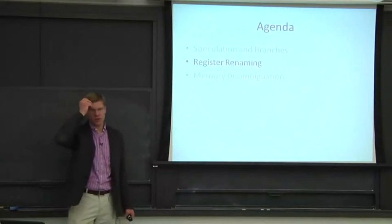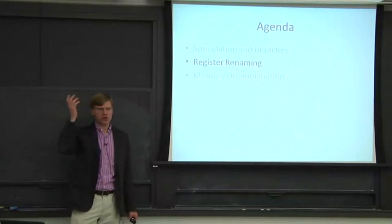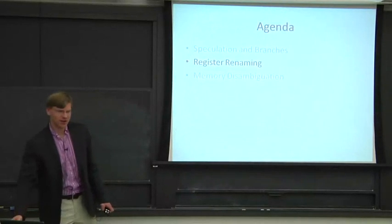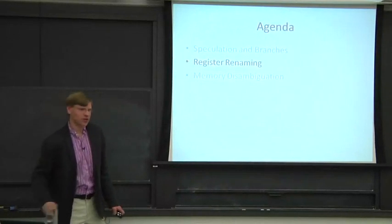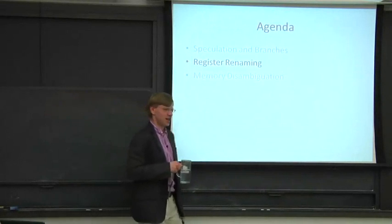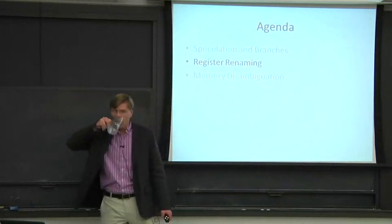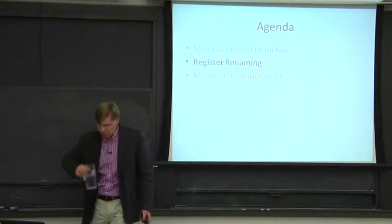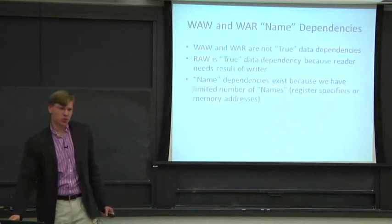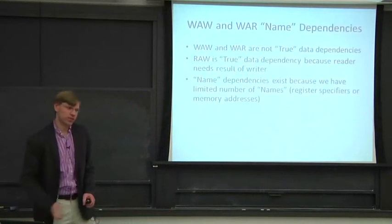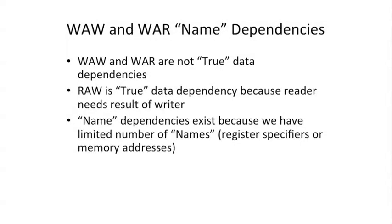That brings up the question of register renaming. What is register renaming? Hopefully some of you skimmed the Tomasulo algorithm paper that I assigned, because we're going to be discussing that and the motivation for that work. So what is limiting our performance in these pipelines, these out-of-order pipelines that we've discussed so far?